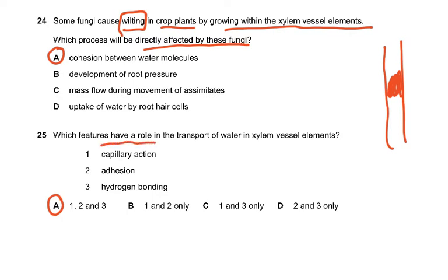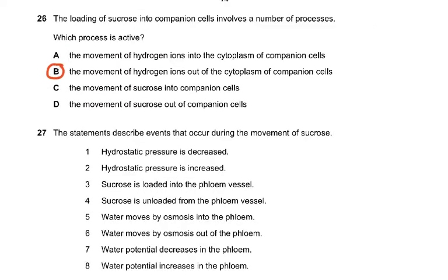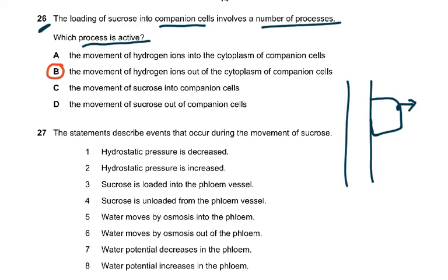Question 25: Which features have a role in the transport of water in xylem vessel elements? Capillary action, adhesion, hydrogen bonding - all three of them. Because capillary action occurs in the xylem vessels, adhesion is water molecules adhering to the wall of the vessel, and hydrogen bonding between water molecules is the cohesion forces. Question 26: The loading of sucrose into companion cells involves a number of processes. Which process is active? It is the movement of hydrogen ions out of the cytoplasm of the companion cells.